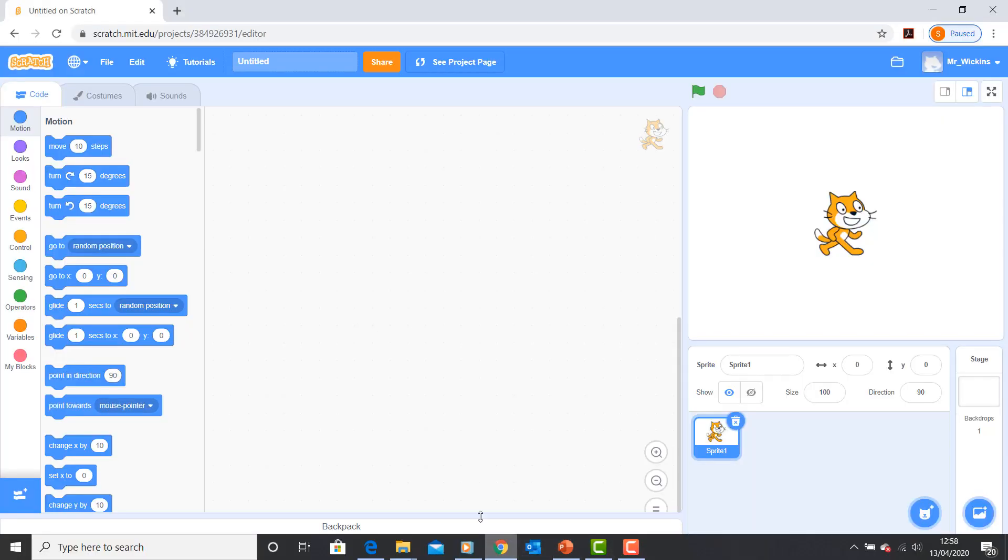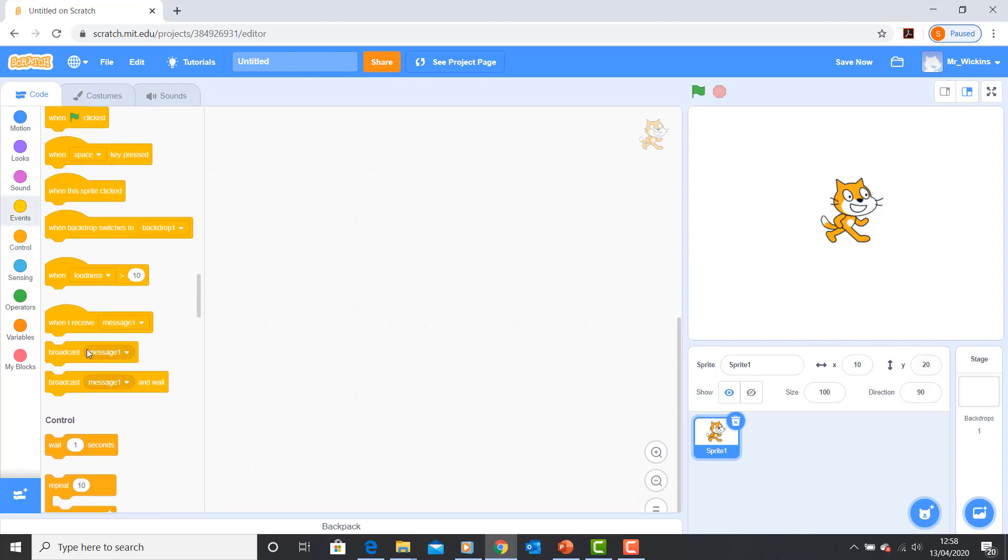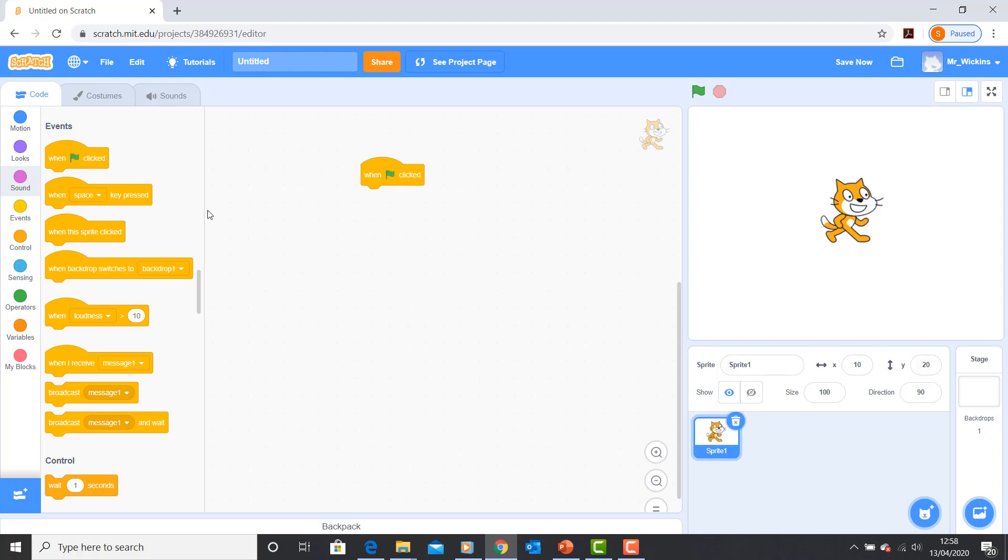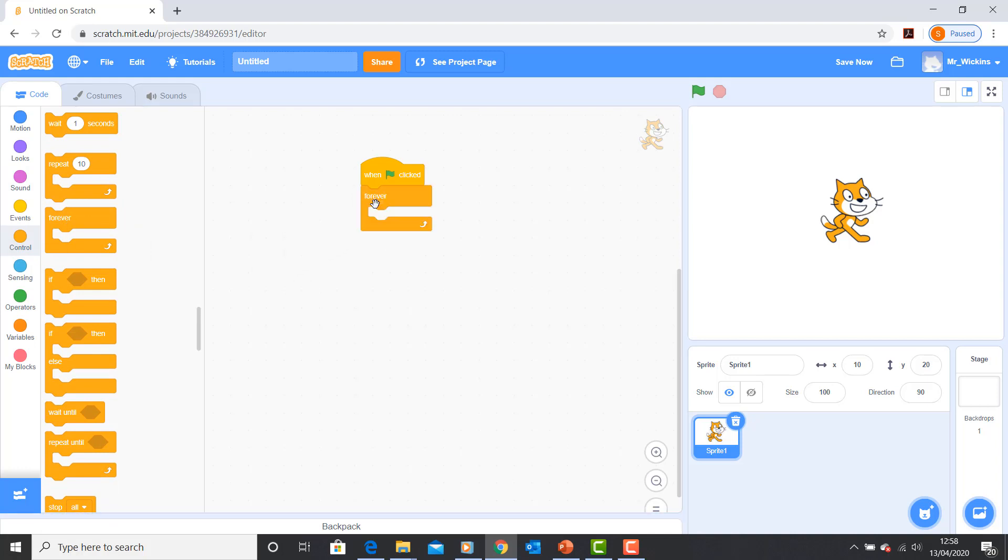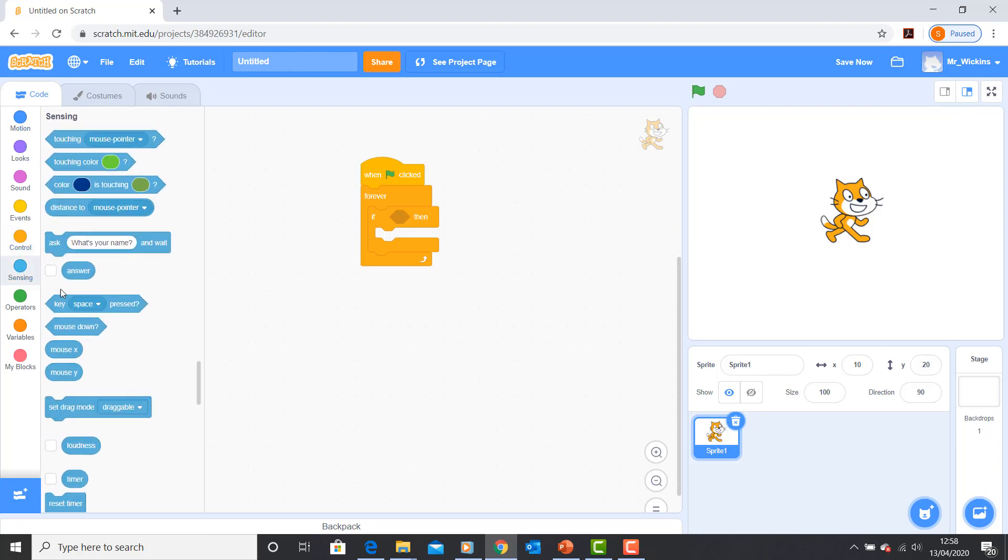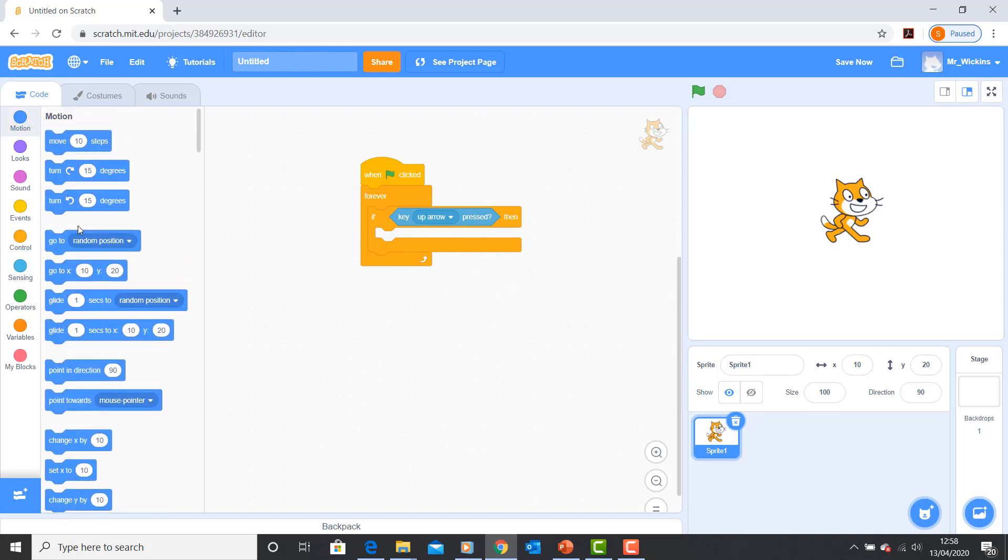Let's have a demonstration to see how we could do that. In Scratch, we've got our cat here. If I go to Events, I can find my hat script 'when the green flag is clicked.' Then I need to get a forever loop and an if statement. I'll be forever checking if the up arrow key is pressed.